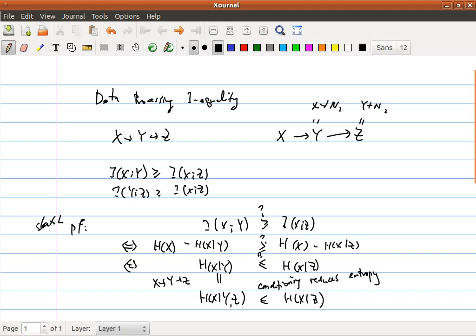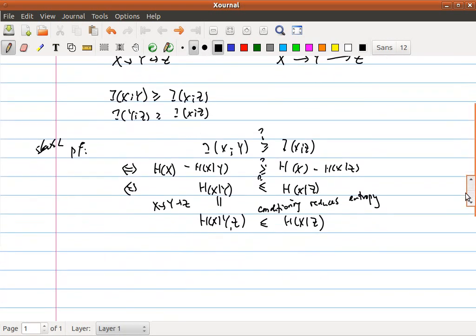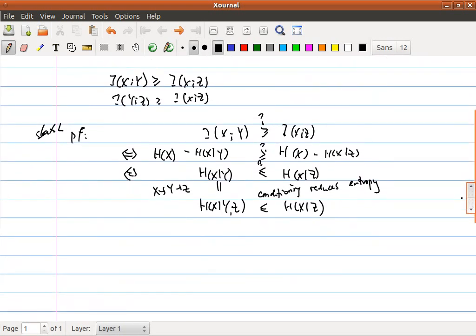All these steps can go backwards, and therefore we have I(x;y), we have the data processing inequality. I can even write it out. This sketch is more or less like a formal proof.